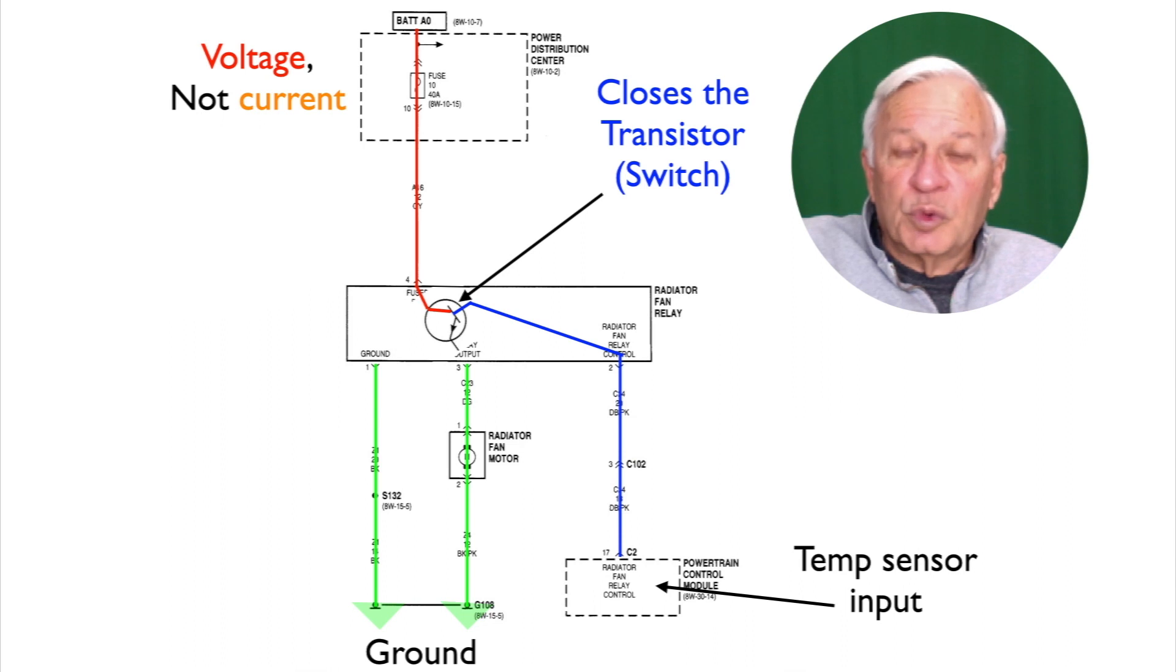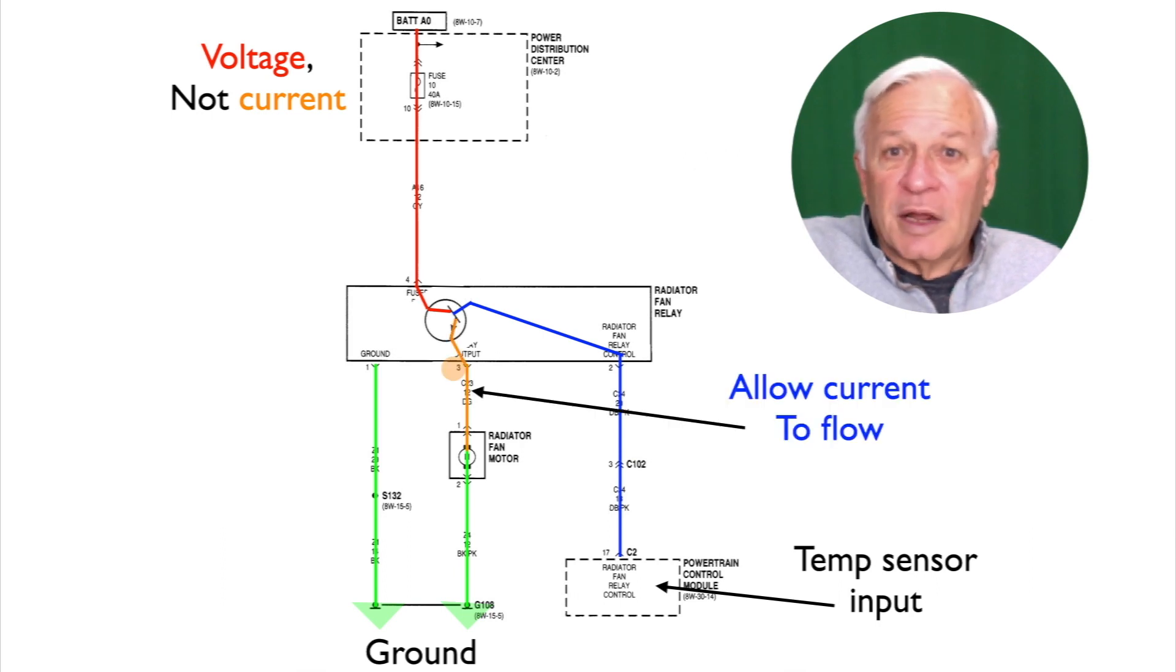When the temperature switch reaches the correct temperature it sends an input signal to the computer. The computer's logic sends an output signal to the fan relay which closes the transistor switch and this allows current to flow out of relay pin number three and onto the fan itself.